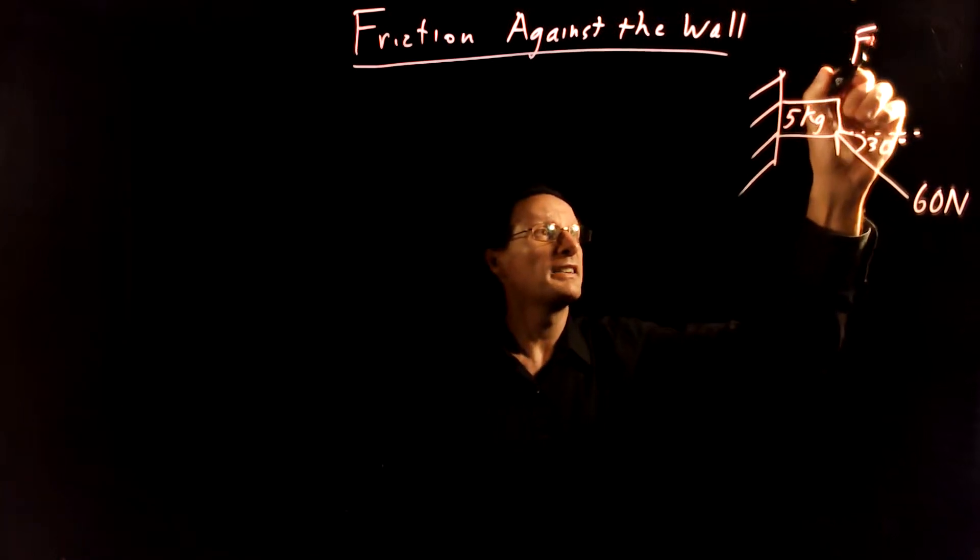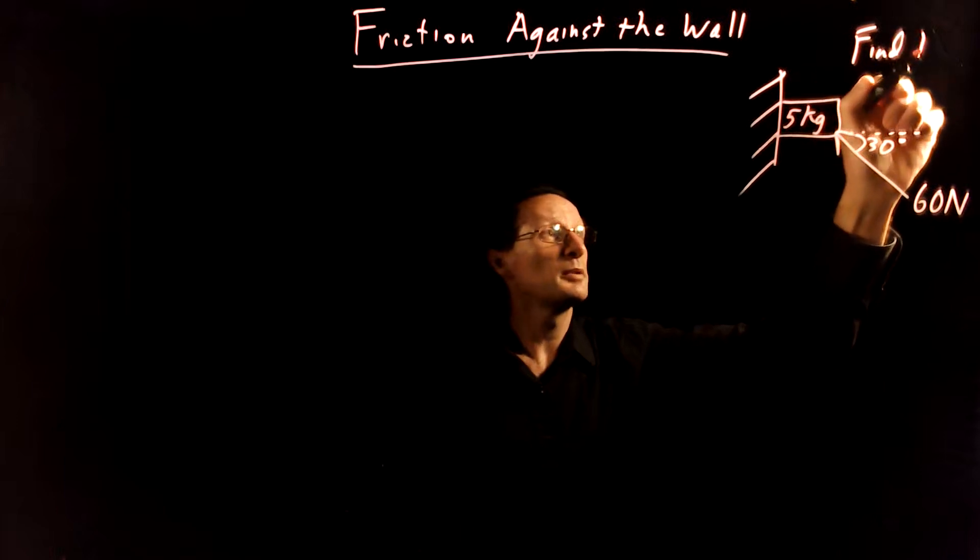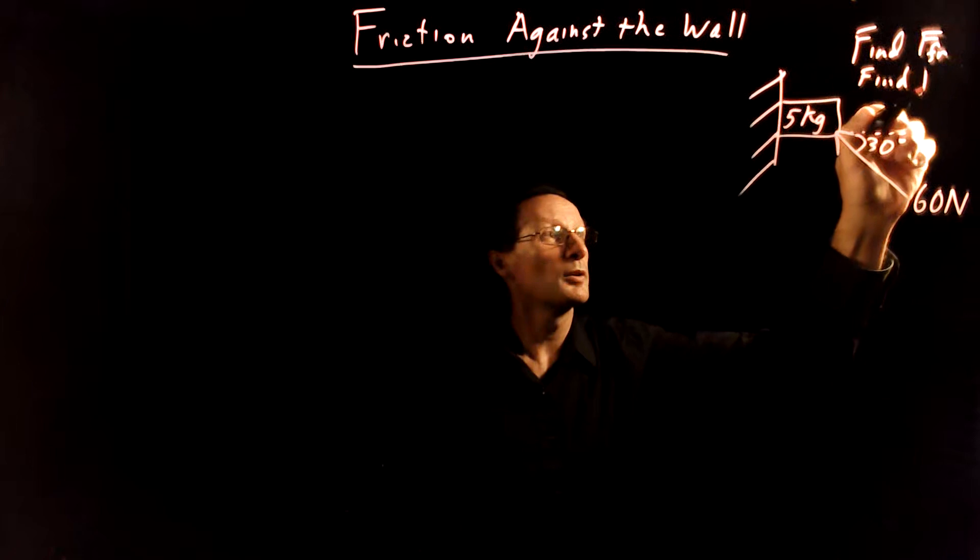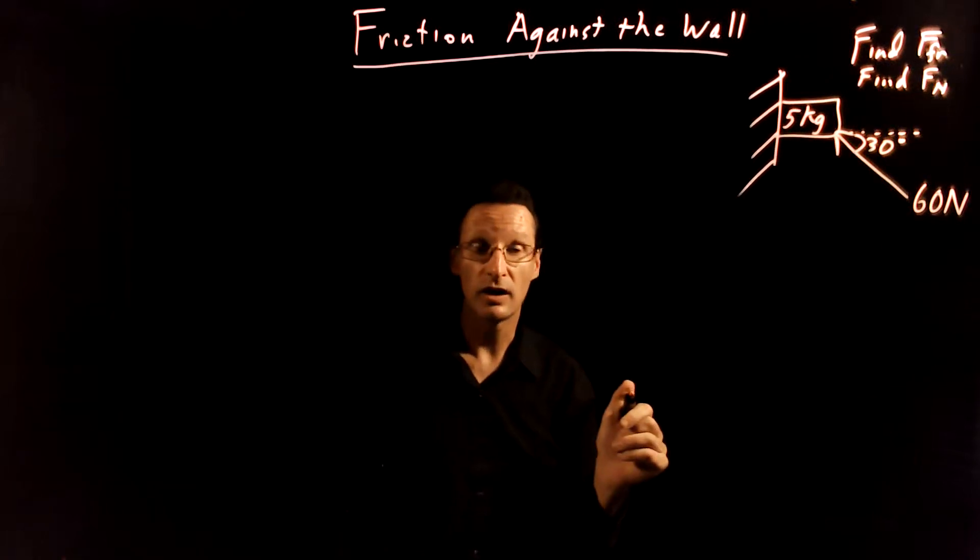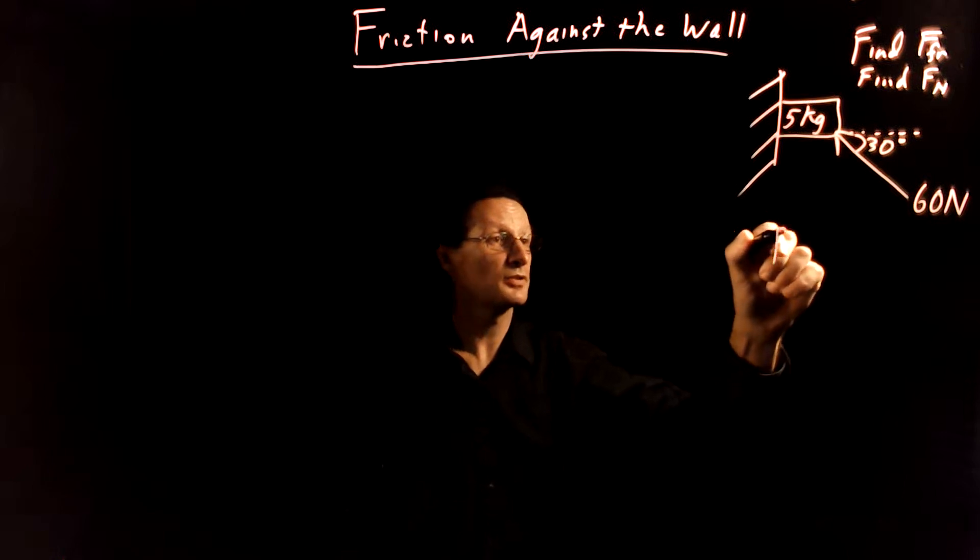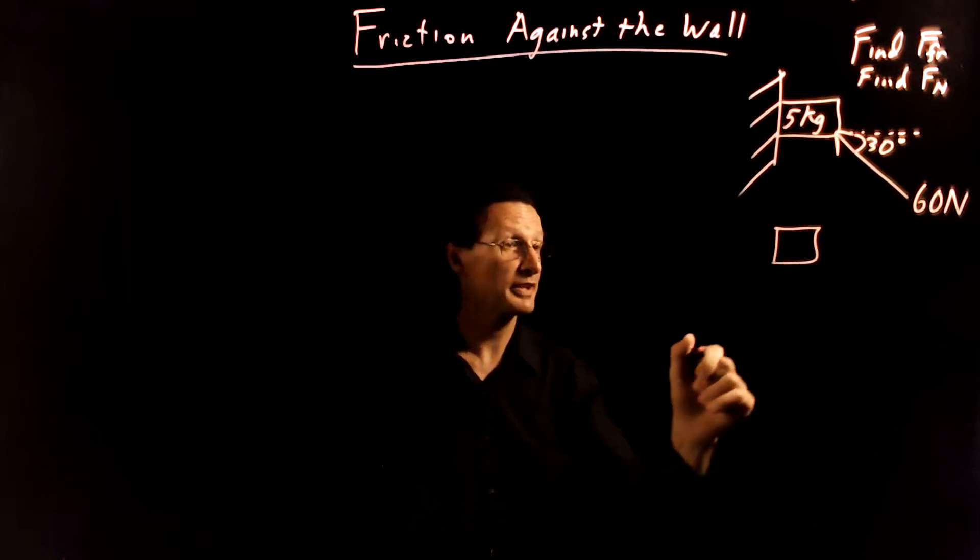Okay and we want to find two things. We want to find the frictional force and we want to find the normal force from the wall on the box. Okay now we have our picture. Let's draw a free body diagram for this.